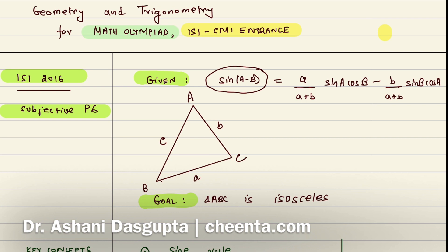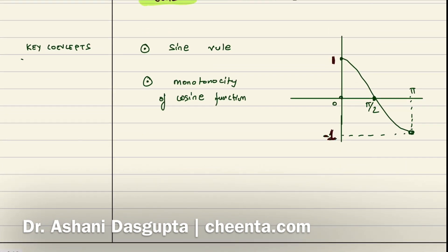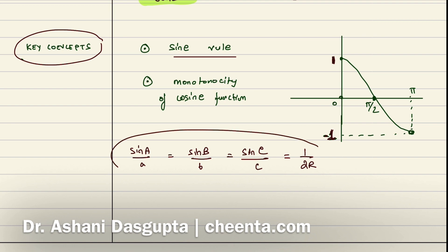Now let's look at the key concepts that we will be using here. First of all there is the sine rule which is simply sinA/a = sinB/b = sinC/c = 1/(2R). This is in any triangle ABC where capital A is the angle A and small a is the side opposite to angle A and so on.